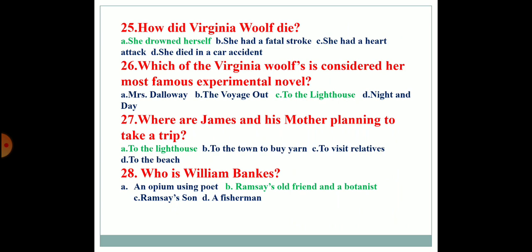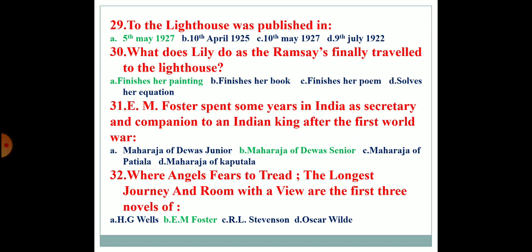Who is William Banks? William Banks is Ramsey's old friend and a botanist. To the Lighthouse was published in which year? It was published on 5th May 1927. What does Lily do as the Ramseys finally travel to the lighthouse? She finishes her painting.